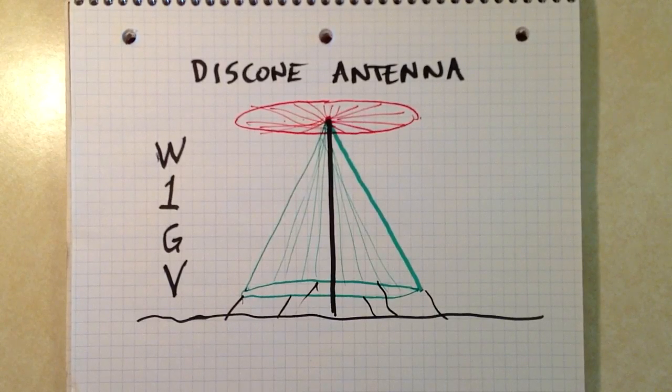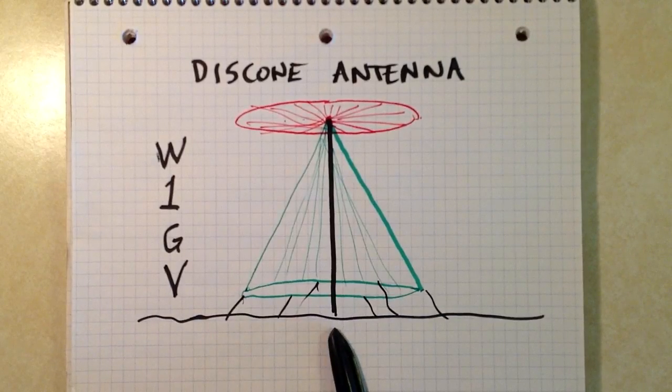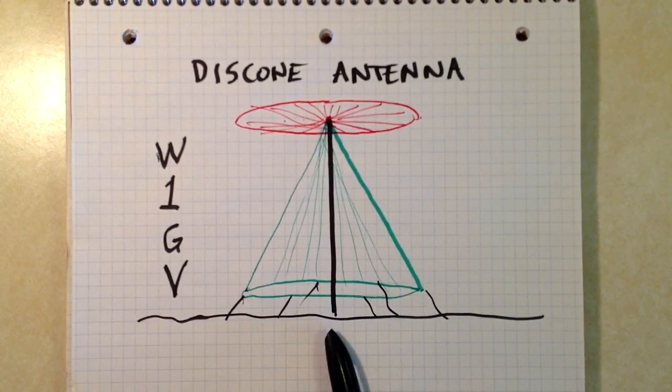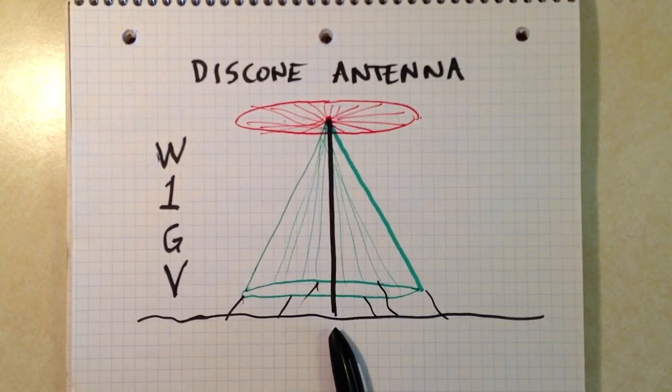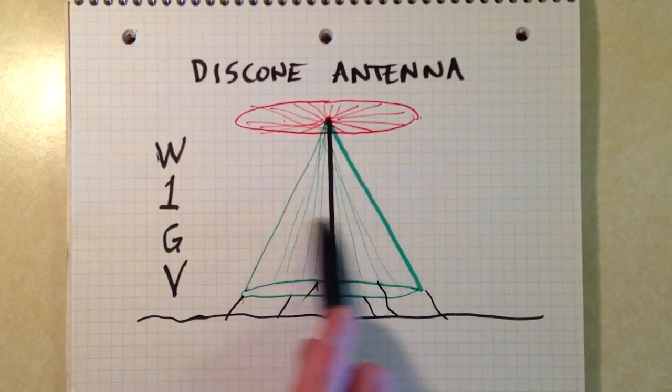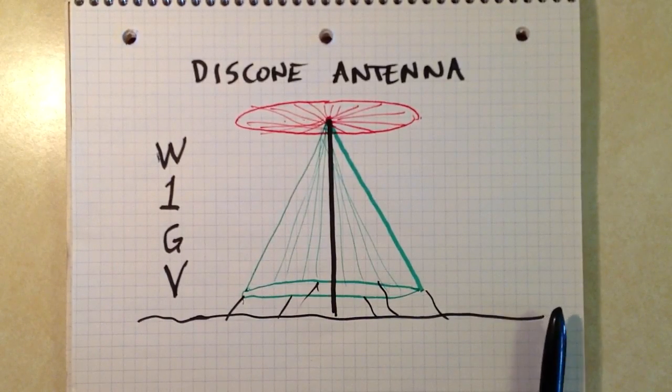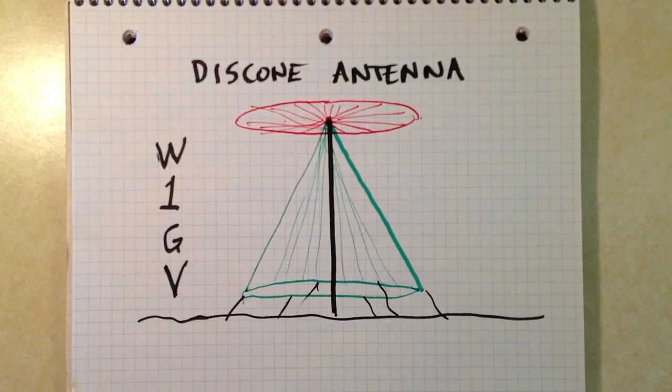What I'm showing here is the surface of your yard or the earth that does not have to have copper plating in it for a ground system. You don't really need so much of a ground system for this because the cone supplies that ground system.